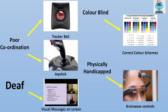If the user is colourblind, there are lots of different variations of colourblindness and different colours that are appropriate. The important thing is to use a correct colour scheme — there are certain colour schemes you try not to use together. For those who are deaf, it is important to have visual messages on screen so that they can read what is happening, or to have someone doing sign language so that they can read the sign language being displayed.